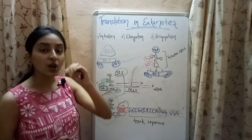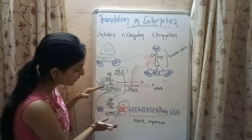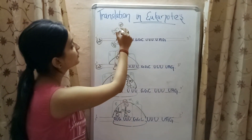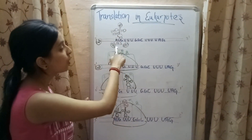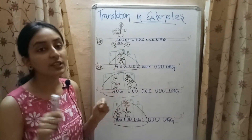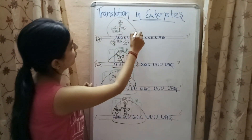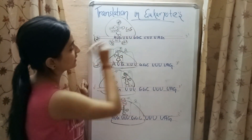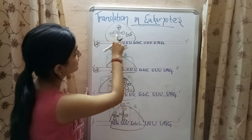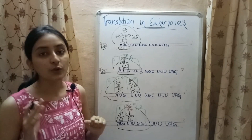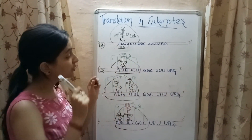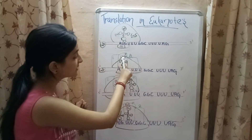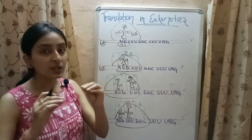After attachment of the initiator tRNA along with the 40S subunit to the AUG initiation codon, the 60S subunit of the ribosome joins the entire complex. Upon attachment of the 60S subunit, all initiation factors are removed. A ribosome consists of three sites: the A site, for entry of new tRNA carrying an amino acid; the P site, which holds the tRNA carrying the growing polypeptide chain; and the E site, through which tRNA exits after delivering its amino acid.